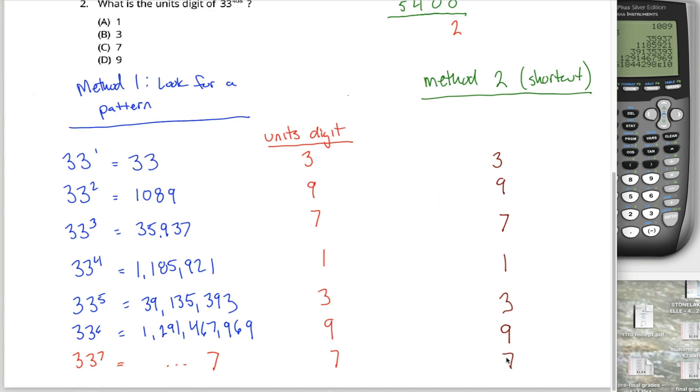Do it again, we'd end up with a seven. Do it again, we'd end up with a one. Do it again, we'd get another three, then another nine, then another seven, then another one, and so on.